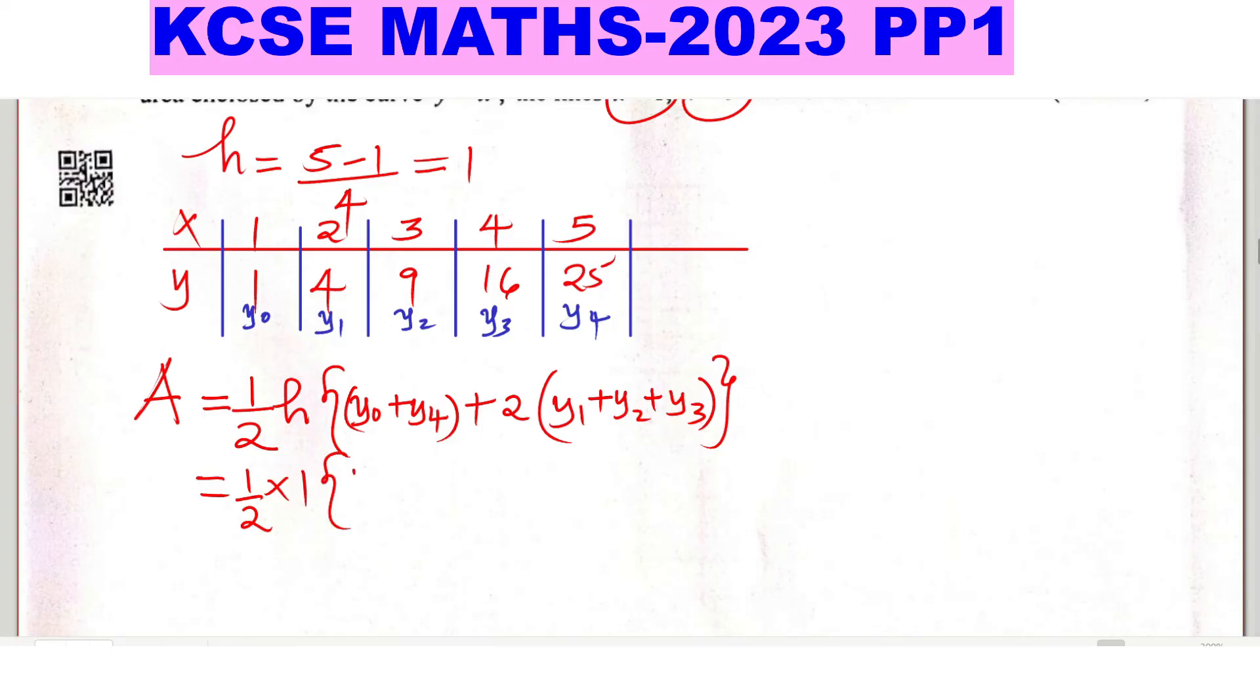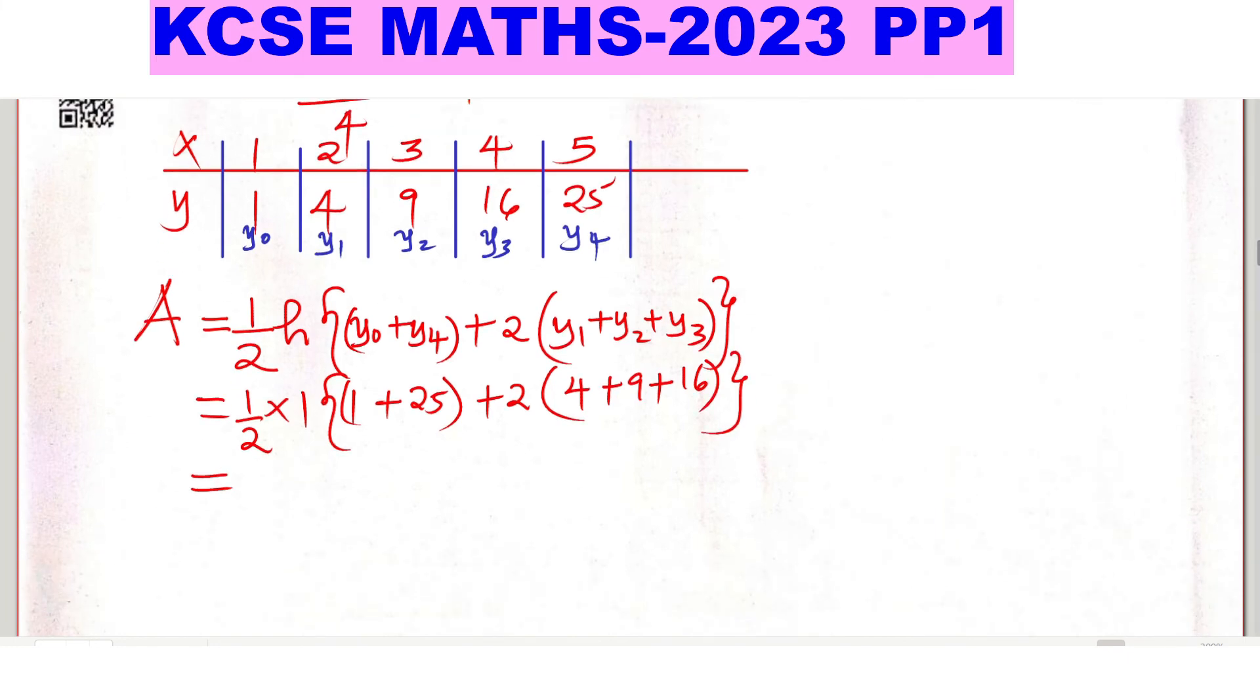We have half times the height which is 1, then y₀ is 1 plus the last which is 25, plus twice the middles: y₁ is 4, y₂ is 9, y₃ is 16.